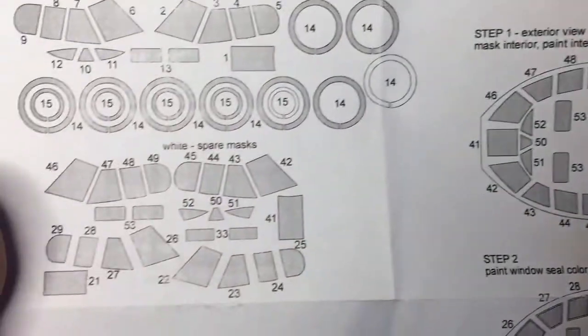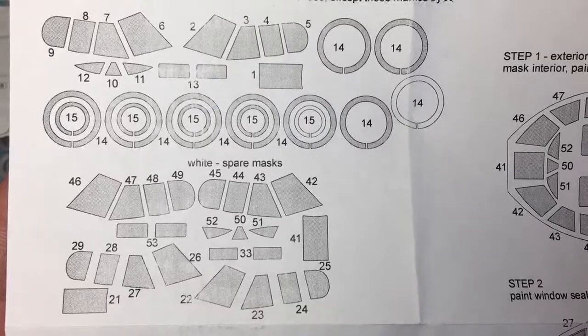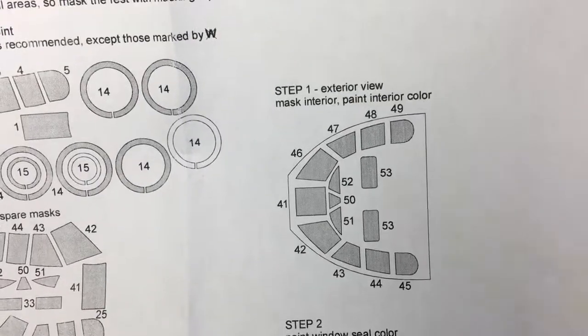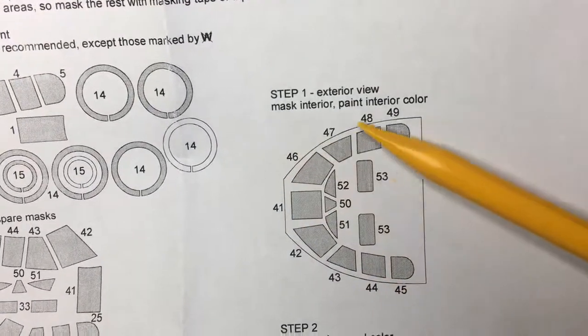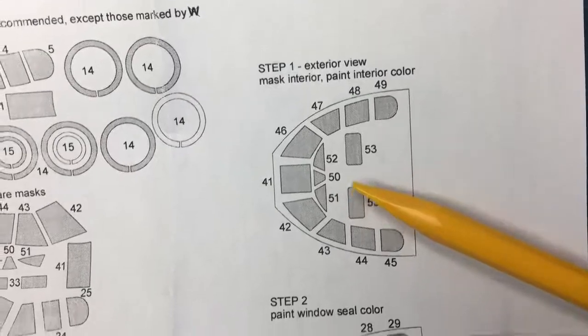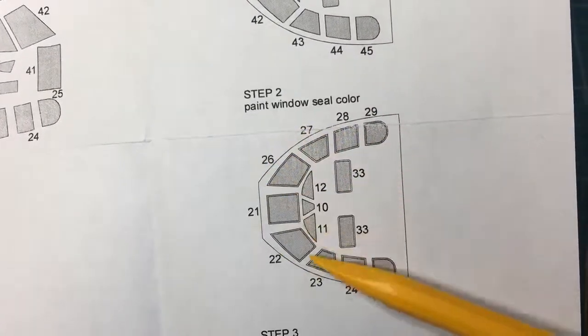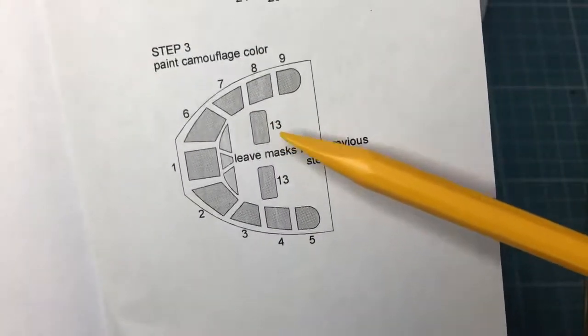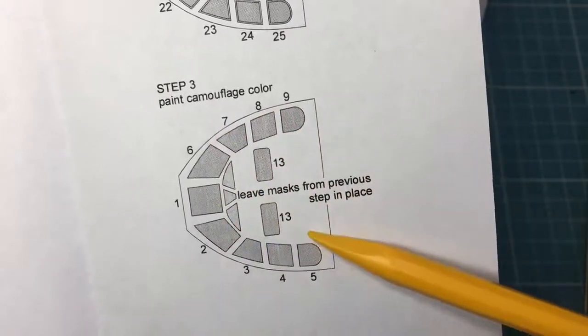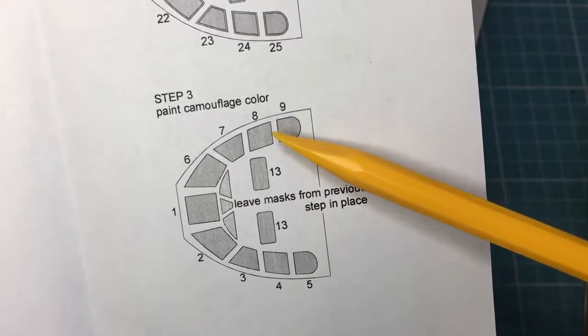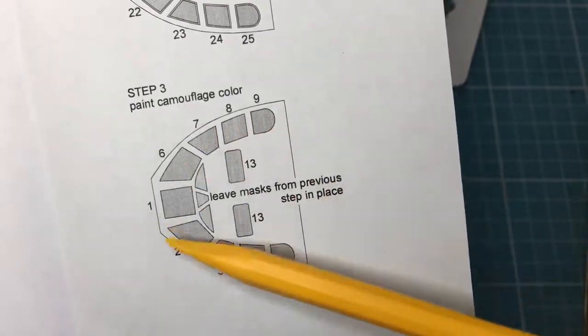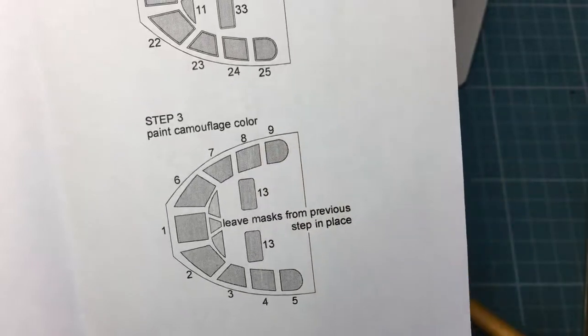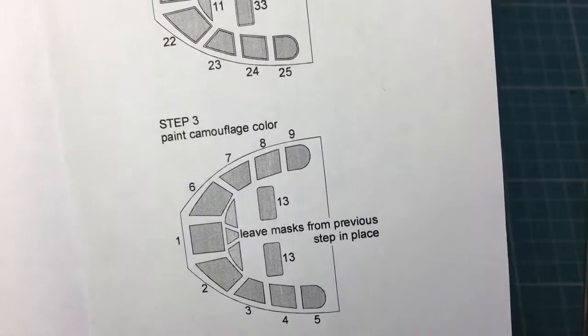We've got the masks here. If you want to have a quick read of that you can pause it. Then we've got interior masks here. They're telling you to put them on and then paint the interior color on the inside. Then you put these on and paint the seal color - whether that's pink or gray whatever. Then you've got the camouflage - you put those masks over the top of the other ones you just put on and paint the camouflage color. When you remove this and the mask below it, you end up with the camouflage color here and the seal color around the windows.